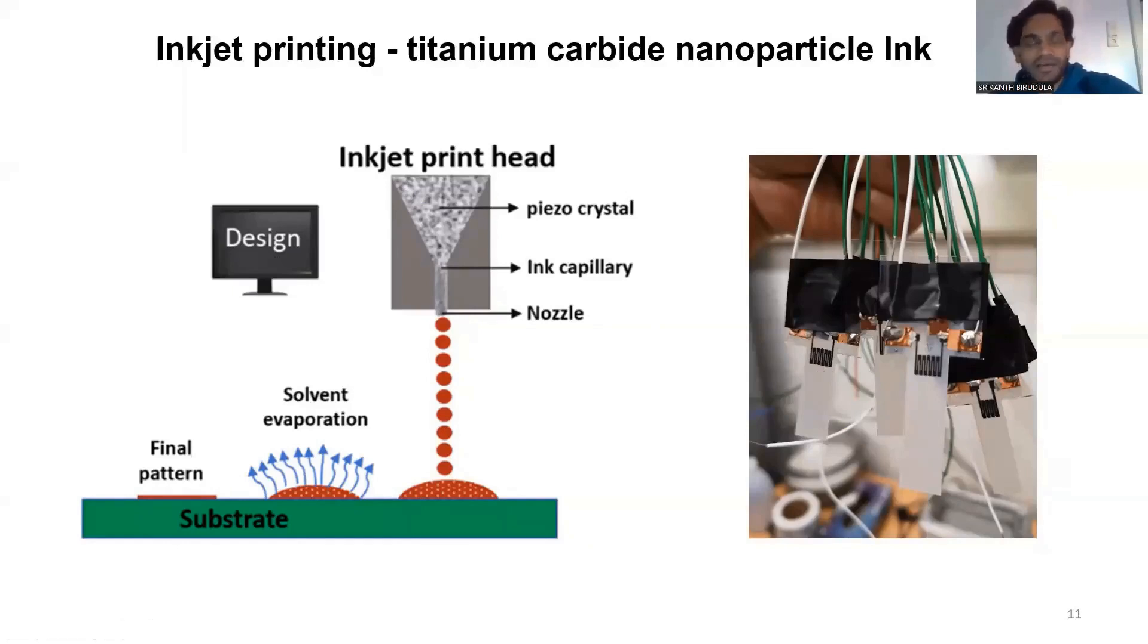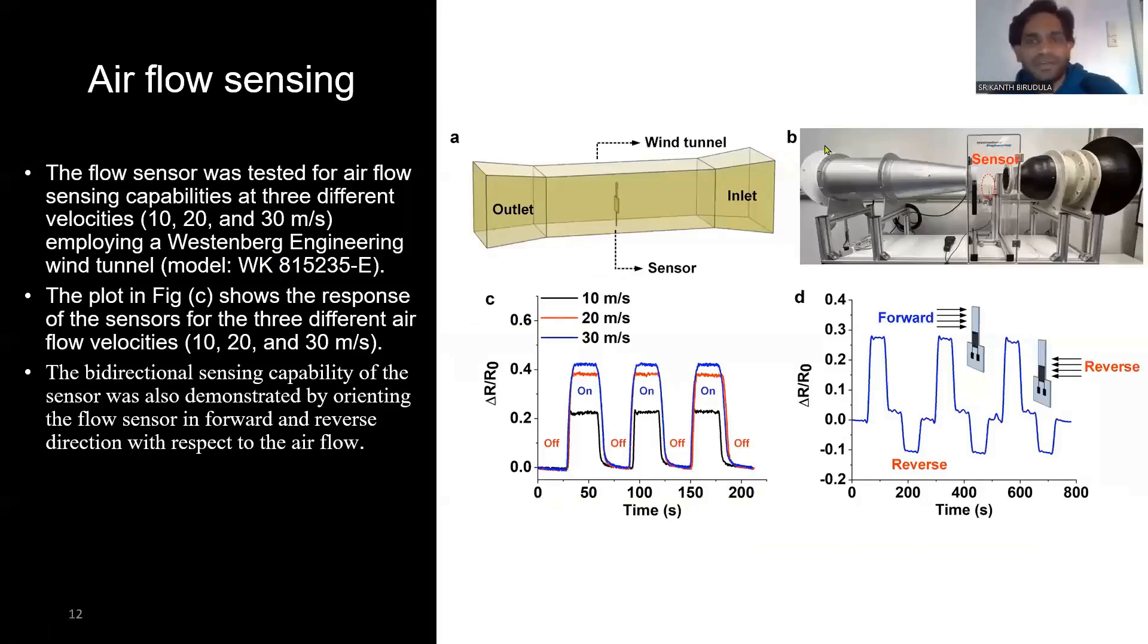We started measuring sensing applications for airflow. In figures A and B, we demonstrate our working principle for the air wind tunnel. Figure A shows the diagram which demonstrates the sensor in the middle with wind inlet and outlet. In figure B, you can see the real experimental setup where the sensor is isolated from the outside atmosphere in a black box with wind input and outlet. We measured resistance change between different velocities from 10 to 20 and 30 m/s with an interval of 30 seconds on and off.